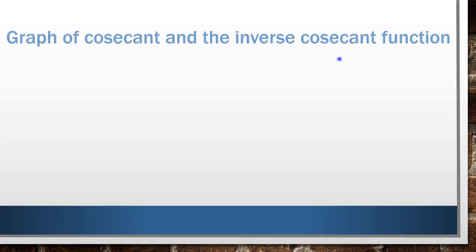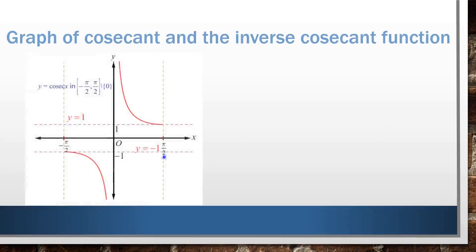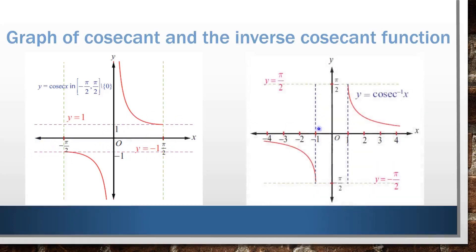Next, we are going to see the graph of cosecant and the inverse cosecant function. Look at this graph. This is the graph of the cosecant function in the closed interval [−π/2, π/2] except 0. The curve does not exist in the region between −1 and 1. The domain is −π/2 to π/2. This is the graph of the inverse cosecant function.